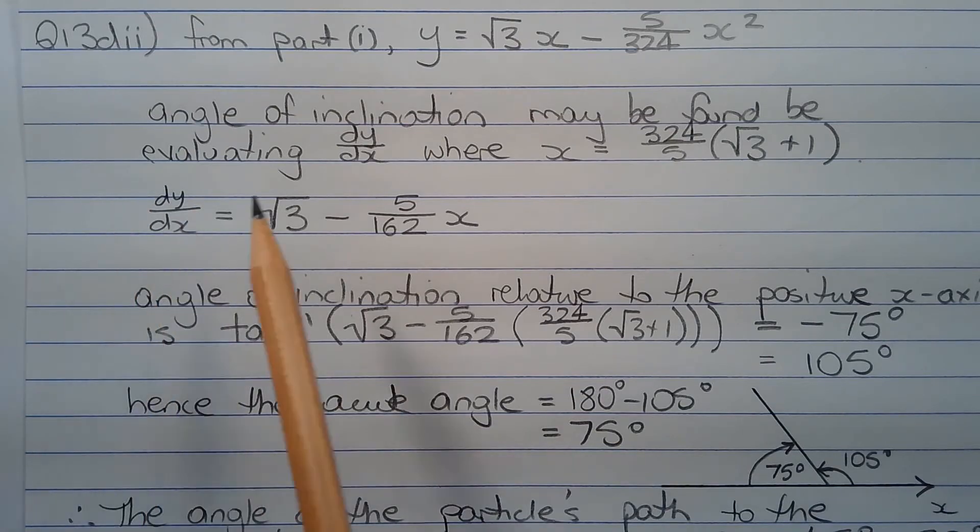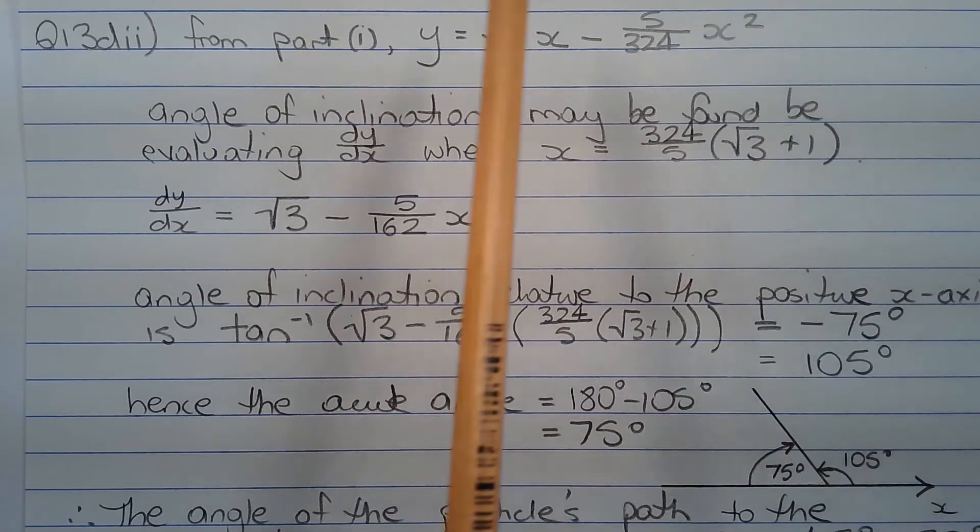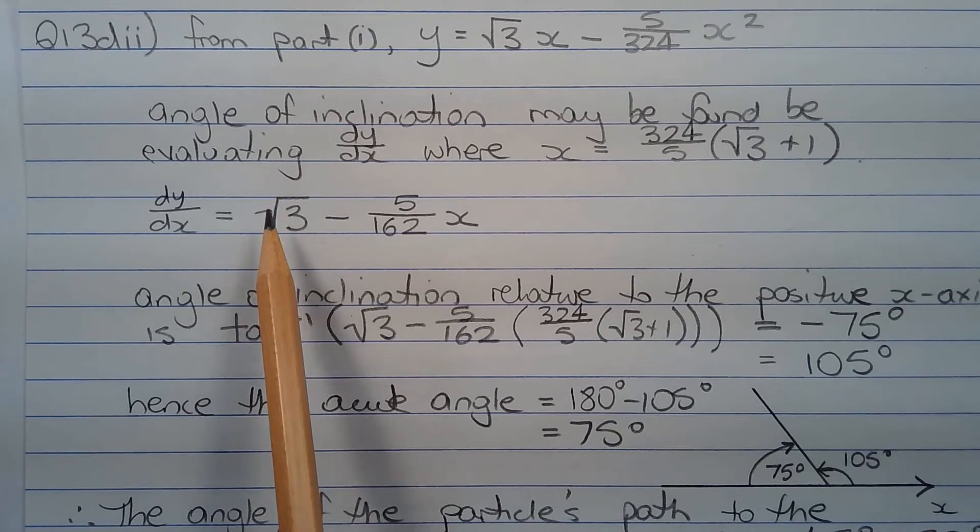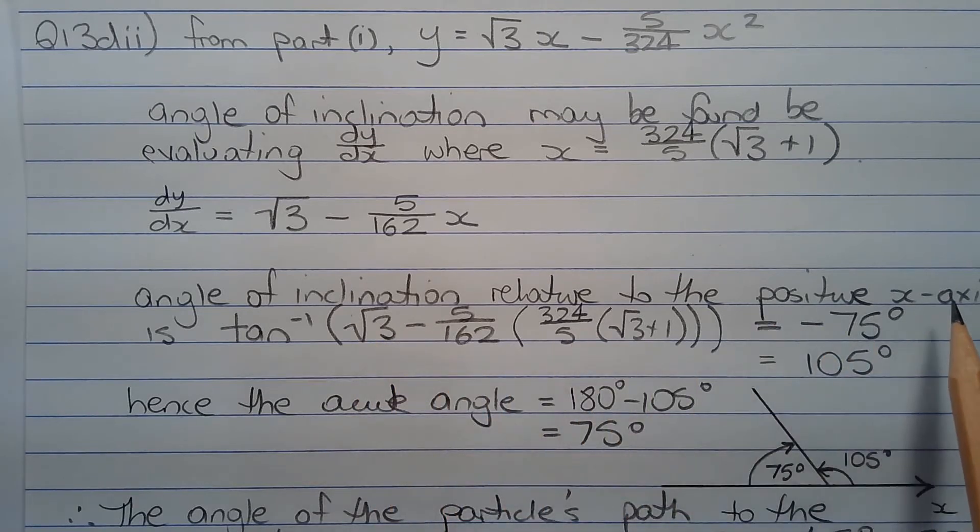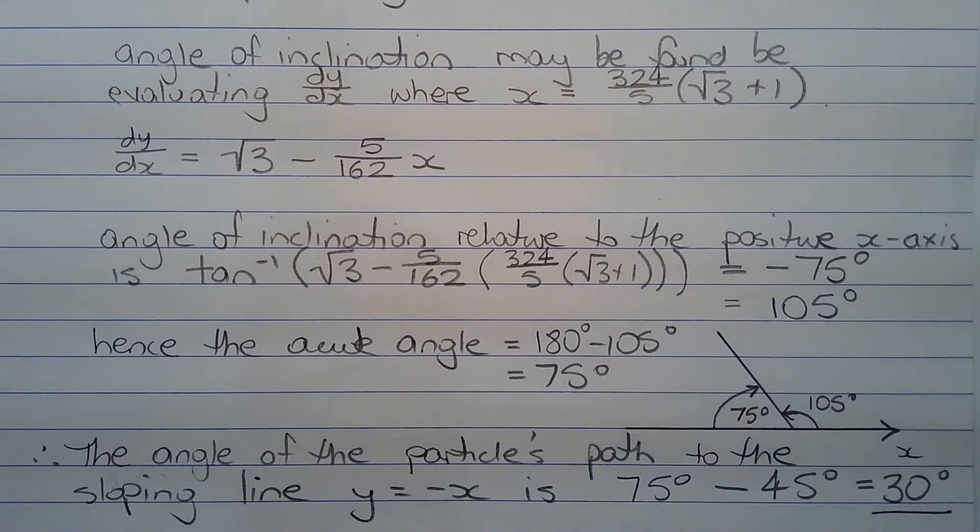Now dy dx is found by differentiating the Cartesian equation with respect to x and that equals root 3 minus 5 over 162 times x. Now the angle of inclination relative to the positive x axis is inverse tan of root 3 minus 5 over 162 times 324 over 5 times root 3 plus 1, which equals negative 75 degrees.